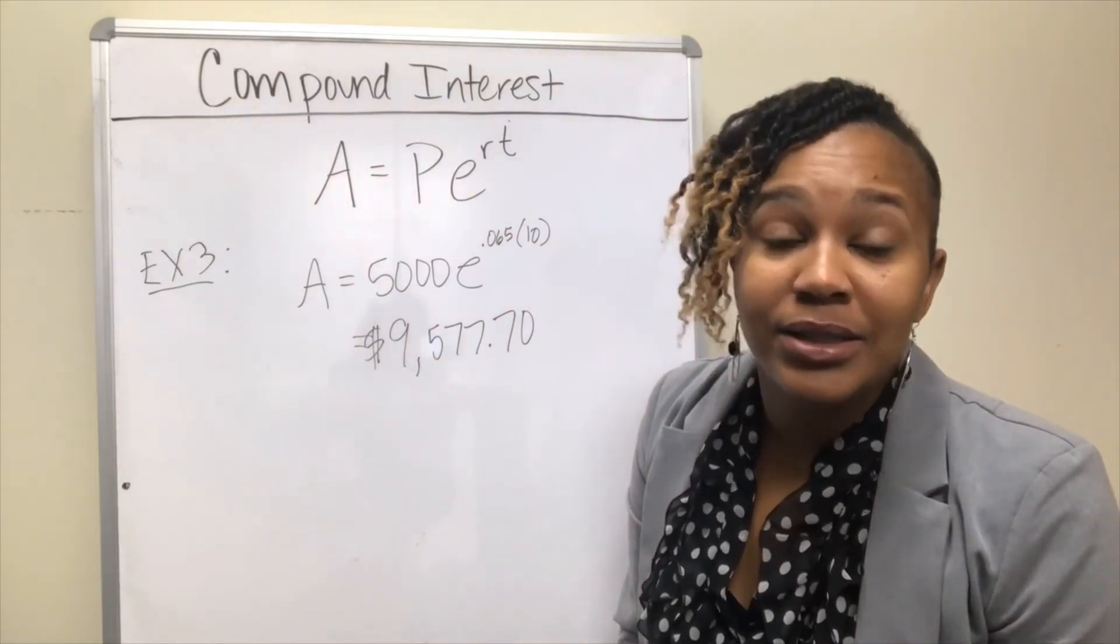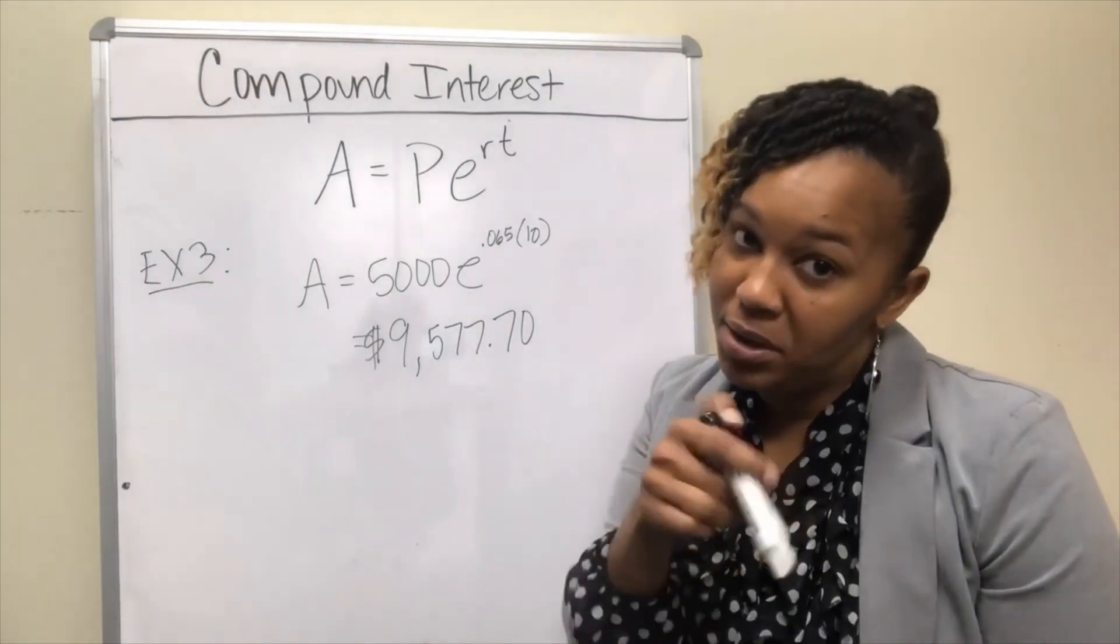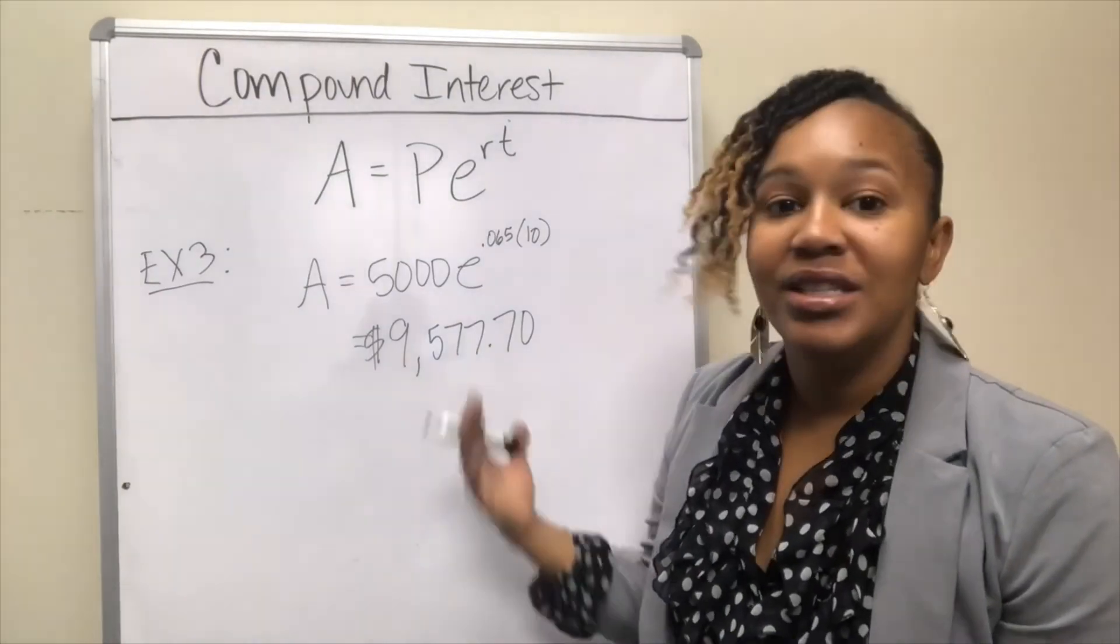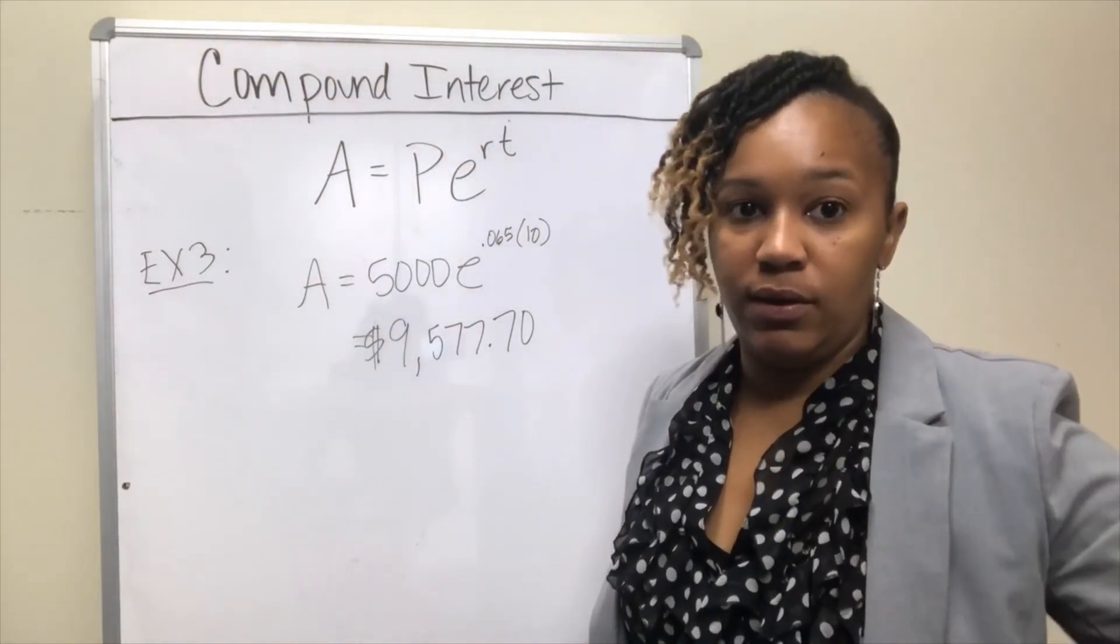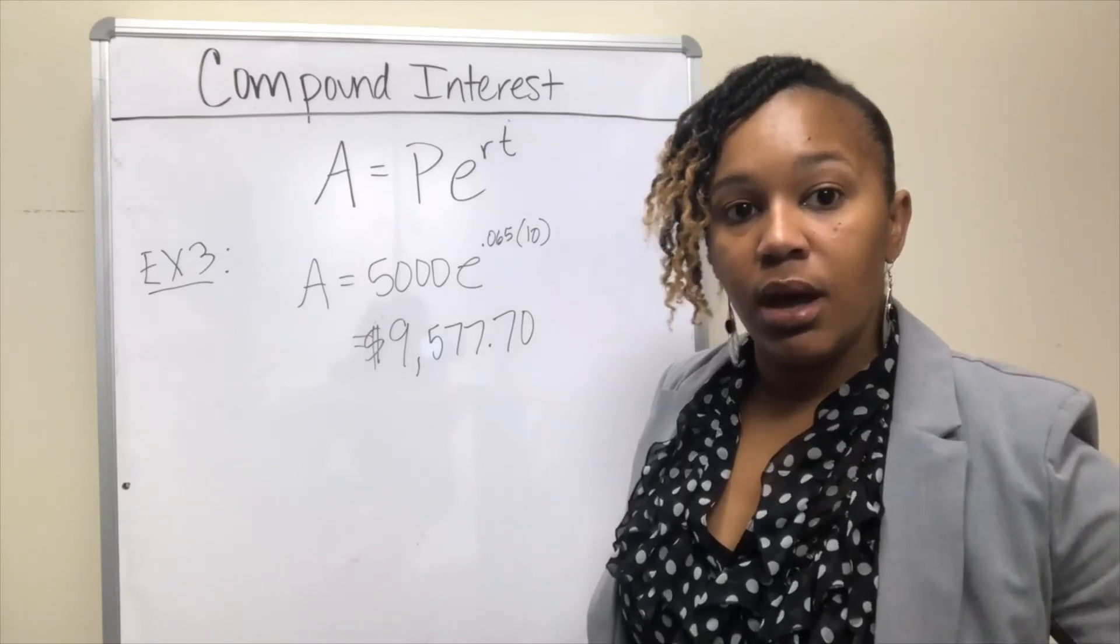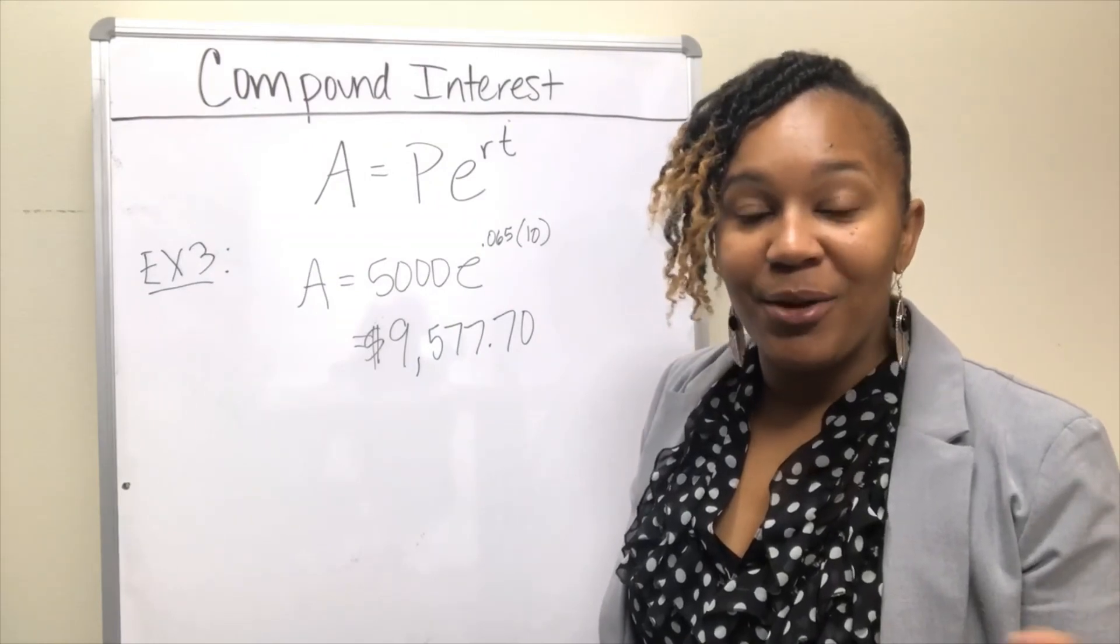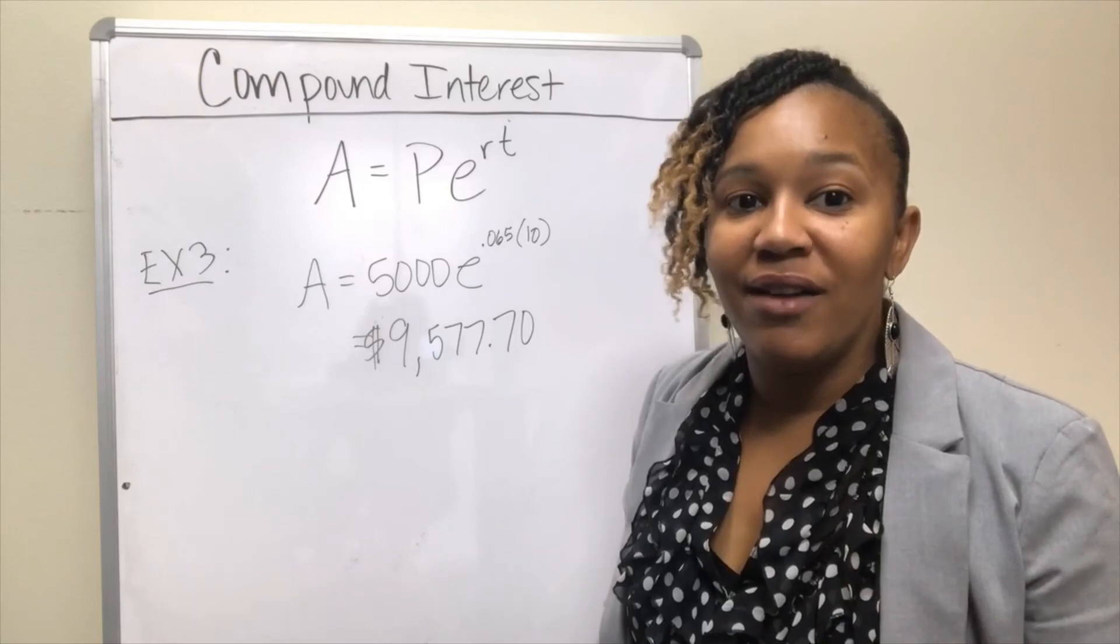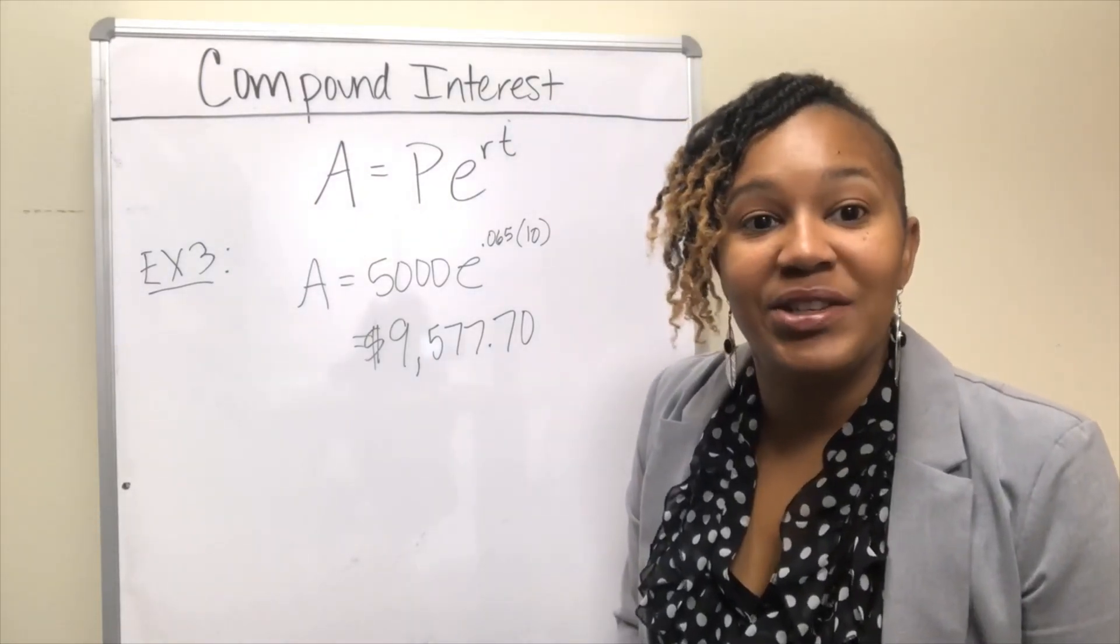But I don't know of many financial institutions that actually compound continuously. So if you know of one, put it in the comments. Let me know. But this is the formula that you use. If you have any questions whatsoever, make sure you include them in the comments. If this video helped you, make sure you hit the like button. And if you haven't already, go ahead and hit that subscribe button. Until next time, I'll see you in the next video.